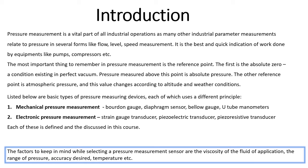In pressure measurement, we generally have a reference point. The first reference point is absolute zero — a condition that exists in a perfect vacuum. Any pressure that is measured with reference to absolute zero is called absolute pressure.